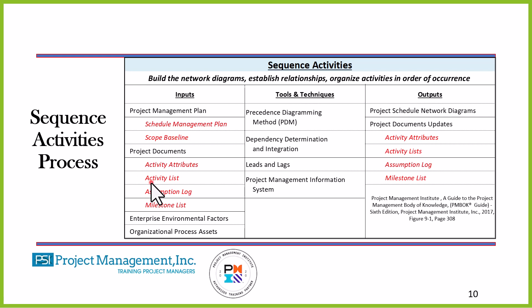The activity list will be what I use to sequence the activities in the project network diagram. The activity attributes is a companion document to the activity list. The activity list just has the list — not sequenced, in random order, without a lot of information. The activity attributes will have the details for each activity: sequence, details of what you're going to do to execute it, and the resources needed — both physical and human resources.